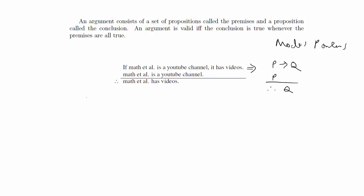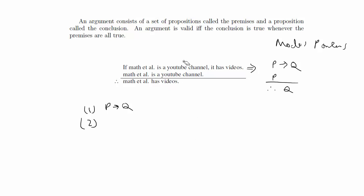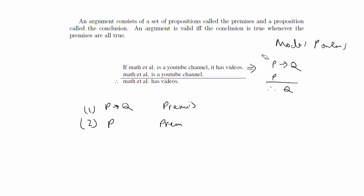To write this as a derivation, you number each line and start by writing the premises. On the right side you write the justification for each line or formula. The first lines will always just be repeating the premises — you know they're true because they're premises. Then you write out your justifications, and the final line will be q. In this example, since modus ponens is a law you can use, the justification would be 'from lines 1 and 2, modus ponens.' We'll go over that more with examples.